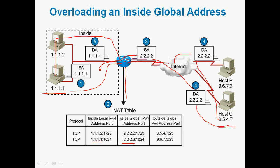With overloading, many private IP addresses can be translated into a single public IP address, and the port number is also translated. Here we can see both sides using TCP protocol. On the destination side, port number 23 is used, which is Telnet, so the port number is also translated as part of this process.